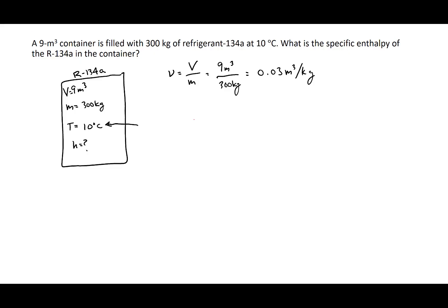So our quality X is equal to 0.6. Now, the question asks for the specific enthalpy. The enthalpy is equal to the enthalpy of the liquid hf, plus the quality multiplied by the enthalpy of vaporization hfg.